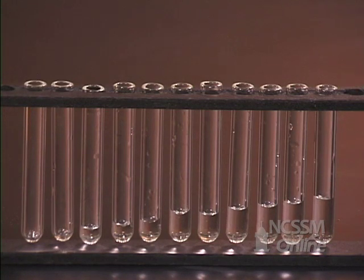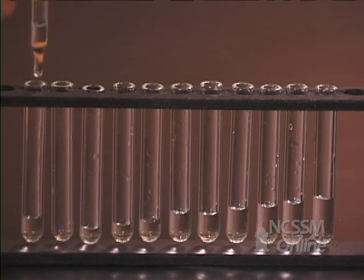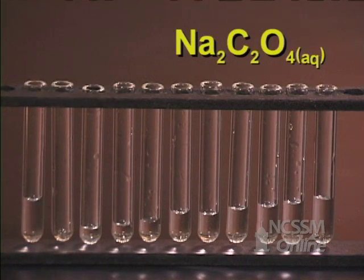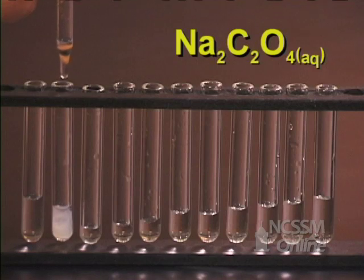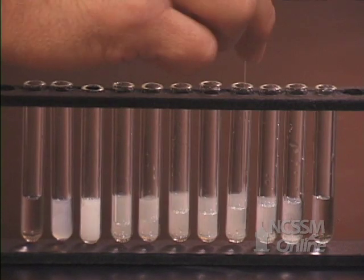We will now add sodium oxalate to each one of the test tubes. We want the total volume of each solution to be constant, so we will make sure that the total number of drops in each test tube is ten. We will place ten drops of sodium oxalate in test tube one, nine drops in test tube two, eight in test tube three, seven in test tube four, and so on.